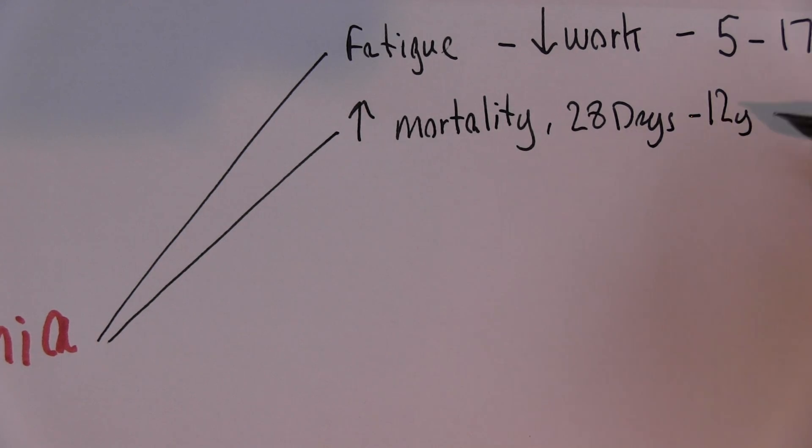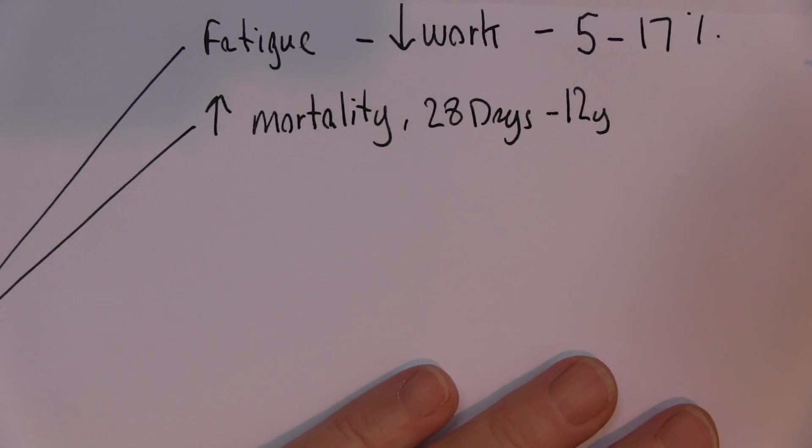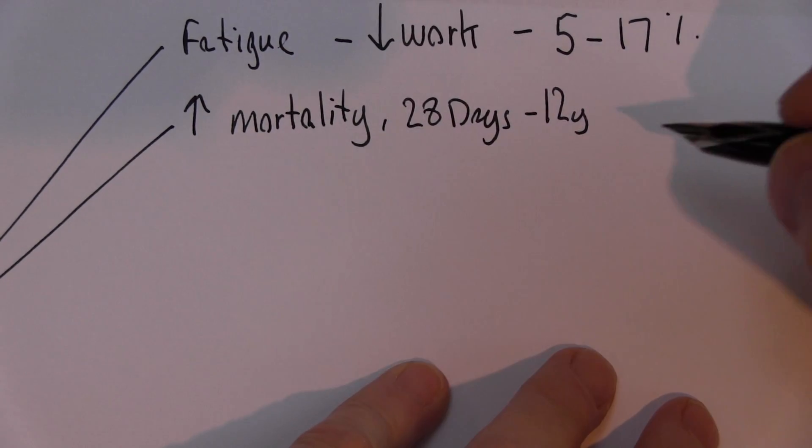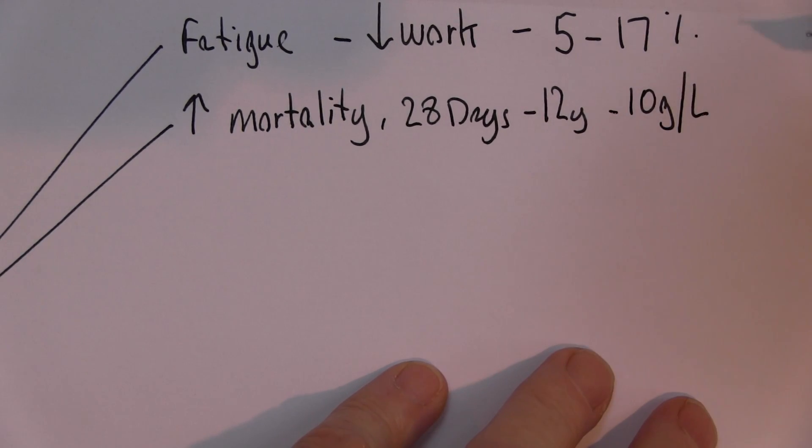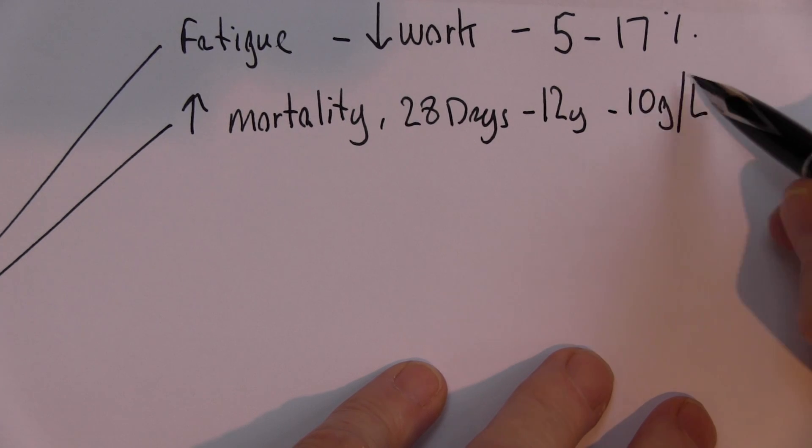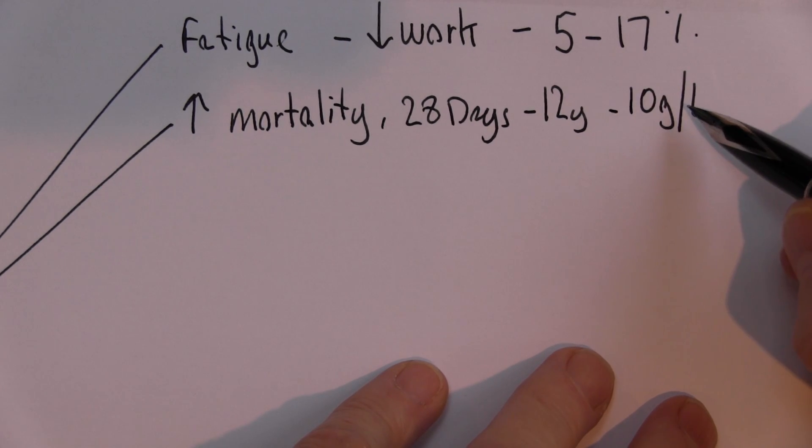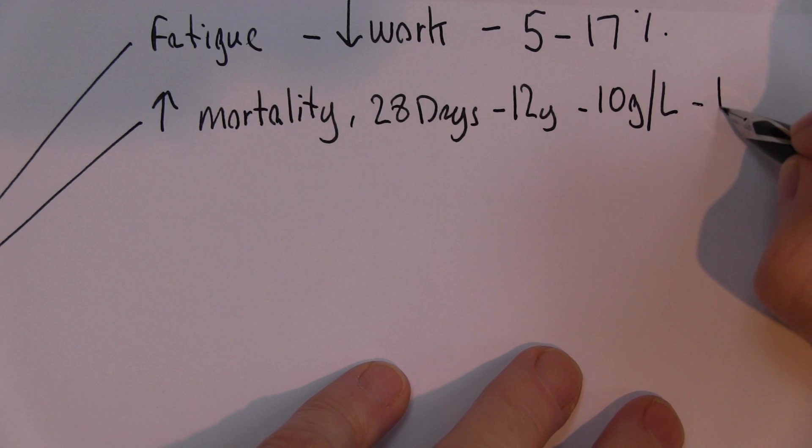if you took children that were anemic, every time you increased their hemoglobin by 10 grams per liter of blood, every time you could increase their hemoglobin back towards normal levels, that would reduce mortality by 24%.